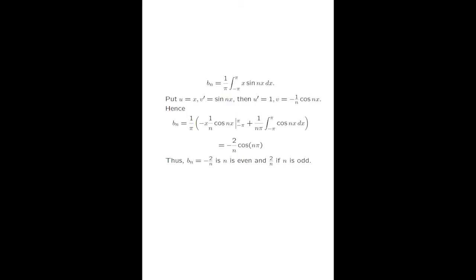You can use exactly the same argument to get a formula for the general nth term. Working out the integral in general by integration by parts, you end up with minus two over n times cosine n pi. Now if you start plugging in numbers, cosine n pi alternates: plus one, minus one, plus one, minus one. So you get bn equals minus two over n when n is even, and two over n when n is odd. It's always nice in mathematics when you're doing something complicated and something simple comes out — those coefficients are just plus or minus two over n.